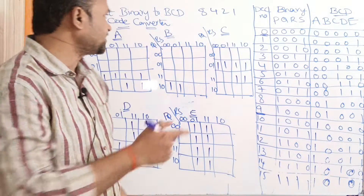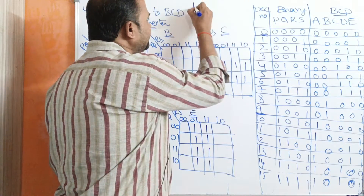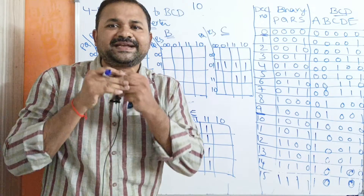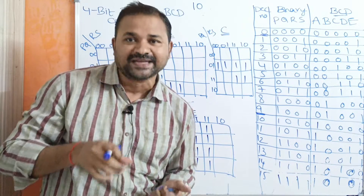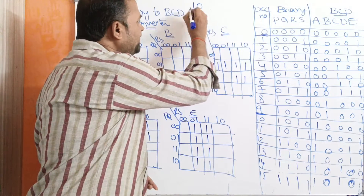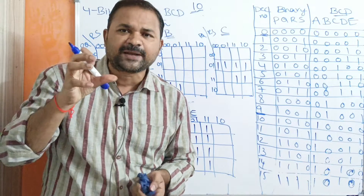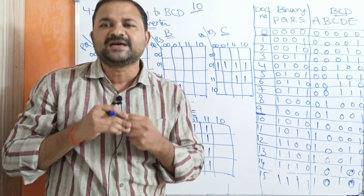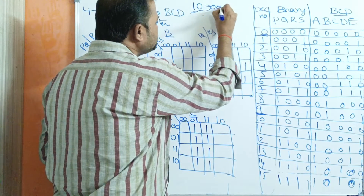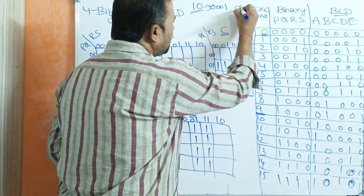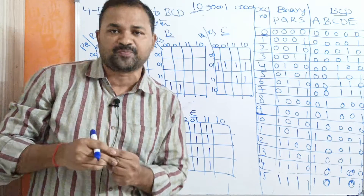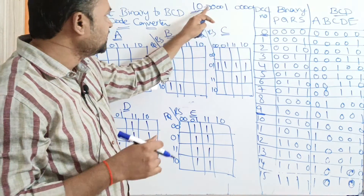What about the remaining numbers? If you take 10, it is not a BCD digit. We have only 10 BCD digits from 0 to 9. For 10, we have 2 digits: 1 and 0. In order to represent each BCD digit, we must require 4 bits. So 1 in BCD is 0001, and 0 in BCD is all 0s. Each BCD digit requires 4 bits.